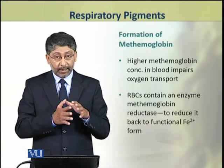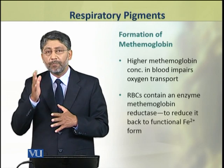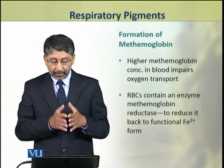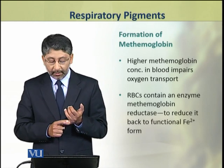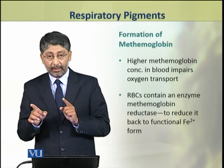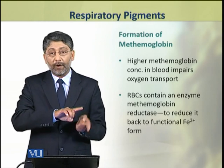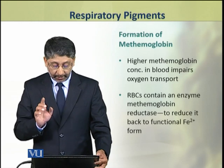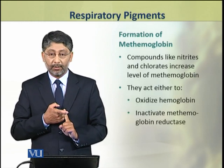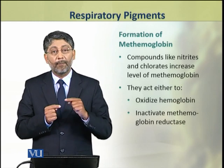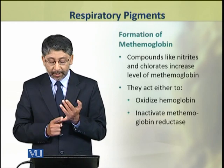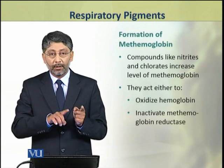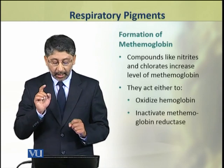If the concentration of methemoglobin in blood becomes too high, it impairs the transport of oxygen by the blood. Red blood cells have an enzyme called methemoglobin reductase, which reduces methemoglobin and converts the ferric iron back to ferrous iron. Several compounds increase the methemoglobin level in blood, such as nitrites and chlorates, which either directly oxidize hemoglobin or inhibit and block the methemoglobin reductase enzyme.